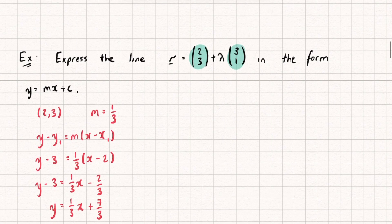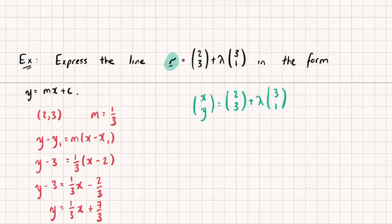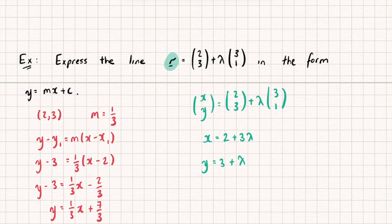There is actually another way to do this, and it's more useful because it's how we handle lines in three dimensions. We recognize that r is just a point on our line, so we can write (x, y) = (2, 3) + λ(3, 1). From this we get a pair of parametric equations: x = 2 + 3λ and y = 3 + λ. To get rid of our parameter λ, we rearrange each equation so that λ is the subject, then set the parametric equations equal to each other — that eliminates the parameter.